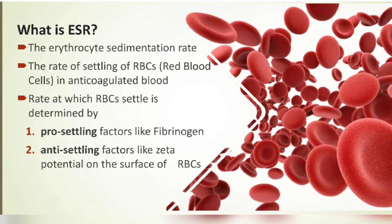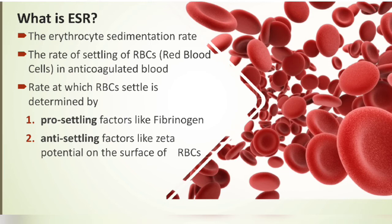ESR is the erythrocyte sedimentation rate. It is the rate of settling of RBCs in anticoagulated blood. The rate at which the RBCs settle down in the whole pipette — the upper column will remain the plasma portion and the lower portion is the RBC settlement. It depends on pro-settling factors such as plasma fibrinogen, and anti-settling factors such as the zeta potential present on the surface of the RBCs.